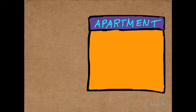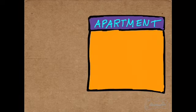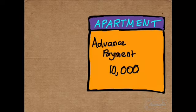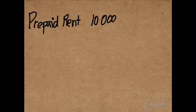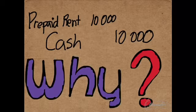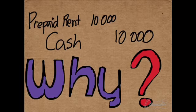Because Mr. Santa would just stay in New York only this Christmas season, he's going to rent an apartment. There's an agreement that he has to pay in advance for the month of December — 10,000. The journal entry for that is a debit to Prepaid Rent for 10,000 and a credit to Cash for 10,000.